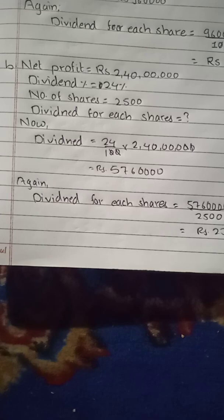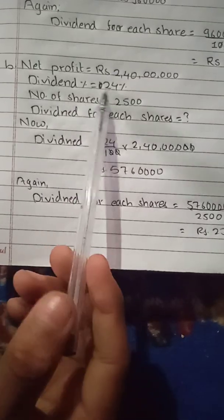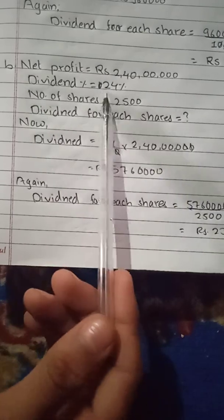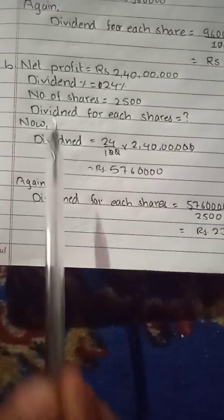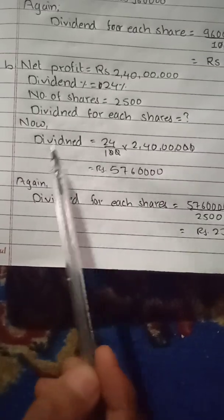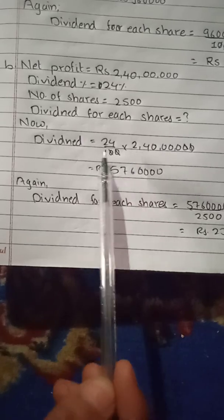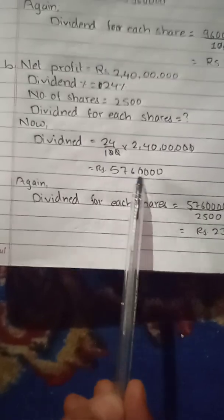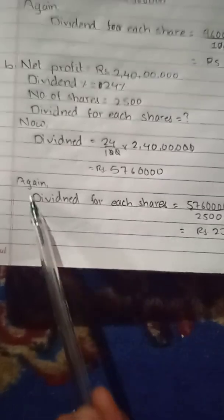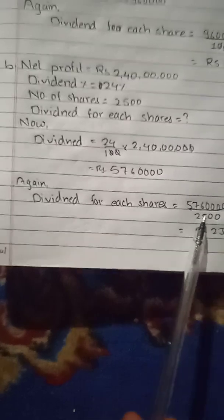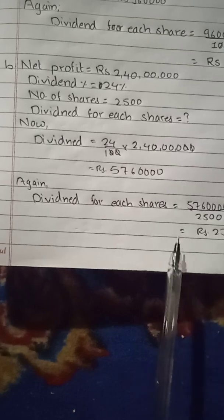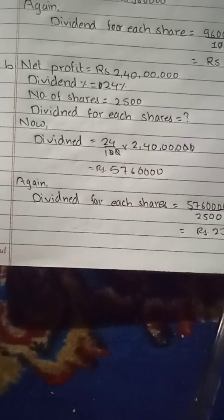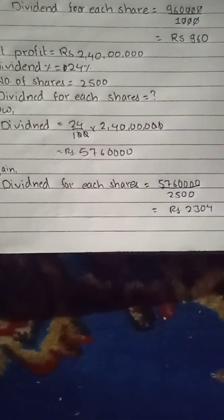Solution: Net profit is Rs. 2 crore 40 lakhs. Dividend percent is 20%. Number of shares is 2,500. Dividend amount = 20% × 2 crore 40 lakhs = Rs. 4,80,00,000 ÷ 100 = Rs. 48,00,000. Dividend for each share = 48,00,000 ÷ 2,500 = Rs. 1,920 per share.